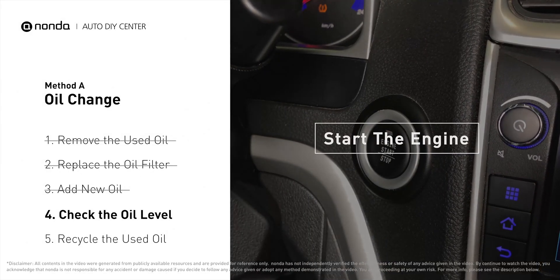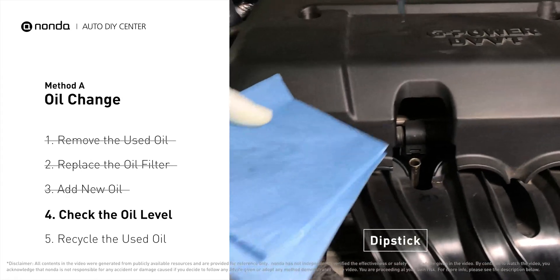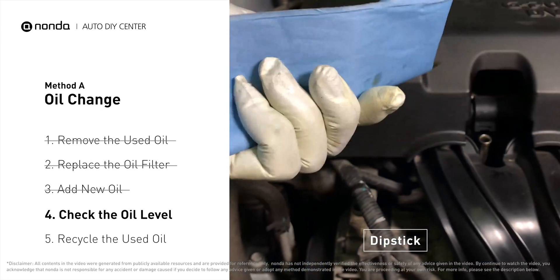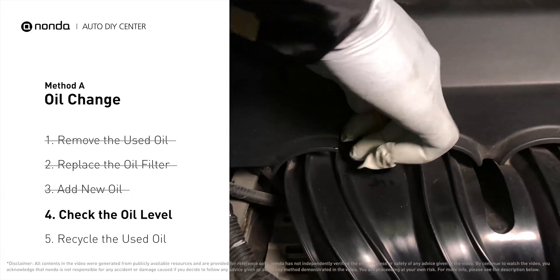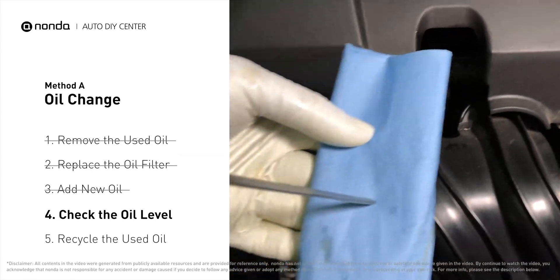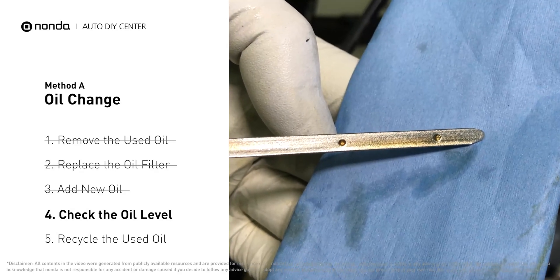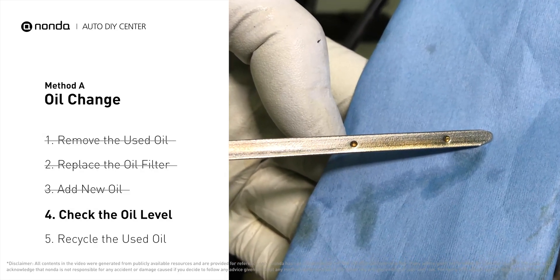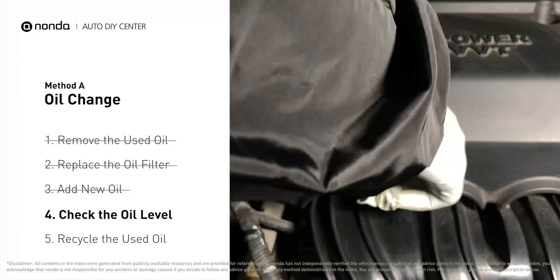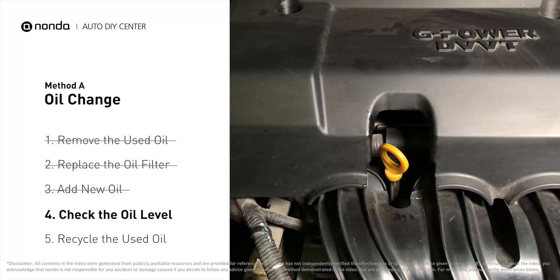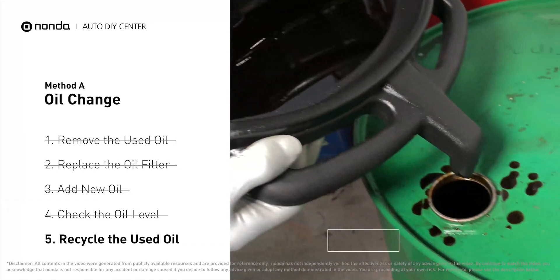To check oil levels, pull the dipstick out and clean it off. Replace the dipstick and pull it out again. The oil should be near the top dot or fill line. If it is close to the lower dot, you'll need to add more oil. If your oil levels are good, replace the dipstick and shut the hood.